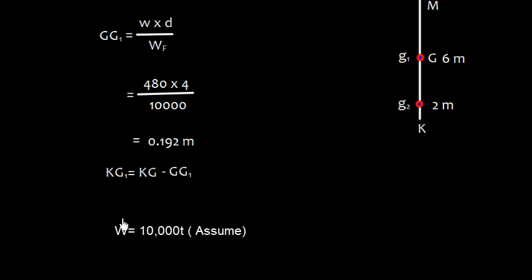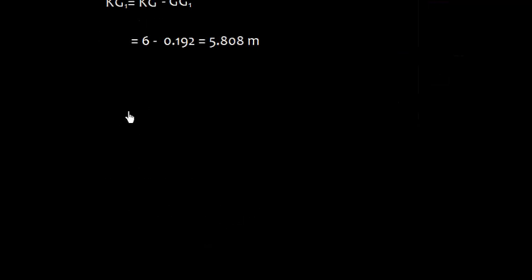This will shift vertically downwards, so KG1 is KG minus GG1, and the value is 5.808. So if KM is given, and we assume that the KM is 7 meter, so 7 minus 5.808 we get 1.192. That is the GM solid.